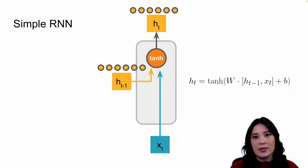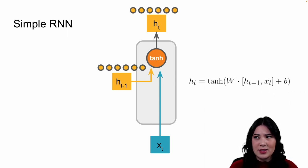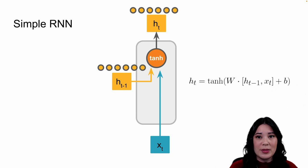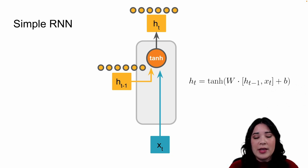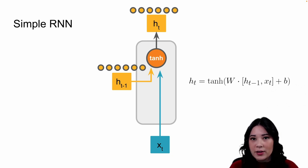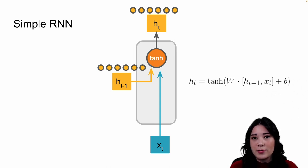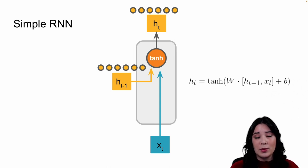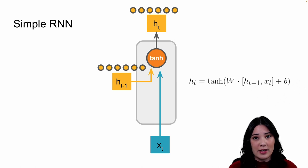One thing we didn't cover in the last lecture is that these hidden states don't necessarily have to be a single value — they could be vectors of different values. Therefore, when building a recurrent network, you often have to choose the dimension you would like for your hidden state.